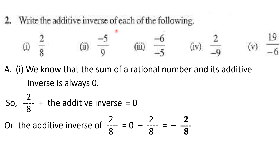Question number two: write the additive inverse of the following. Before attempting this, memorize the concept: the sum of a rational number and its additive inverse is always zero. So for two by eight: two by eight plus its additive inverse equals zero, meaning the additive inverse equals zero minus two by eight, which is minus two by eight. So minus two by eight is the additive inverse of two by eight.